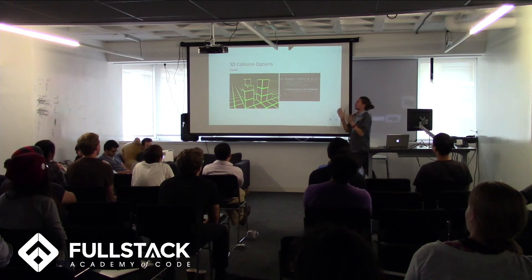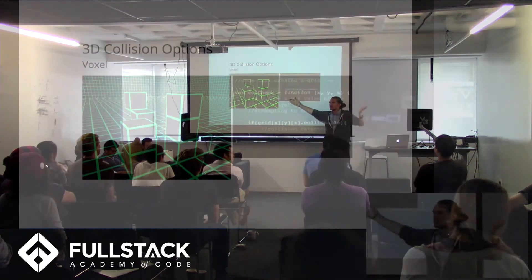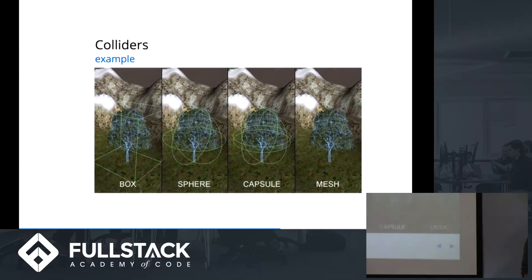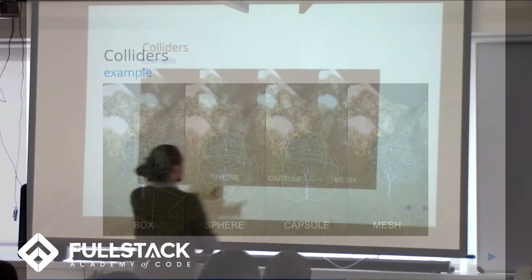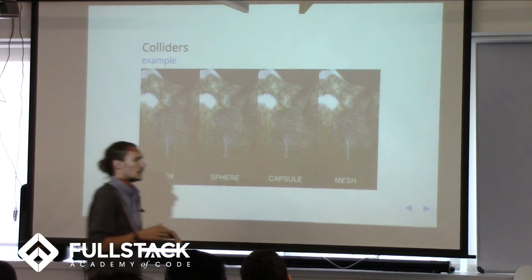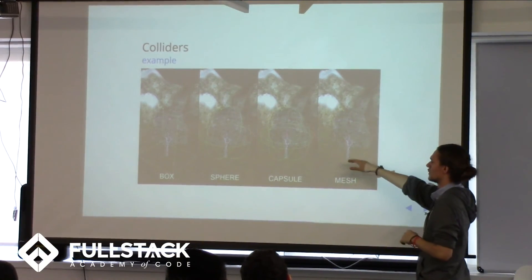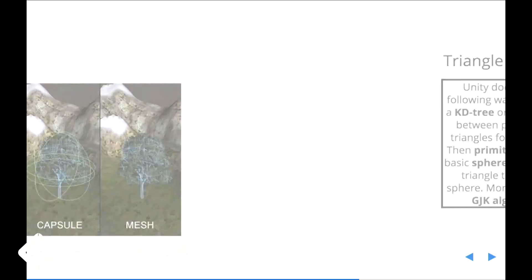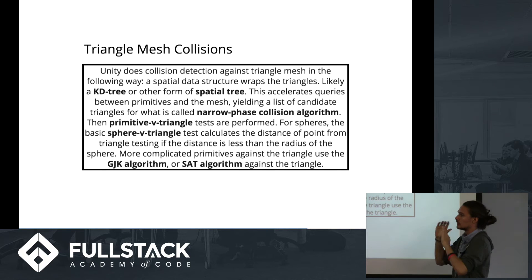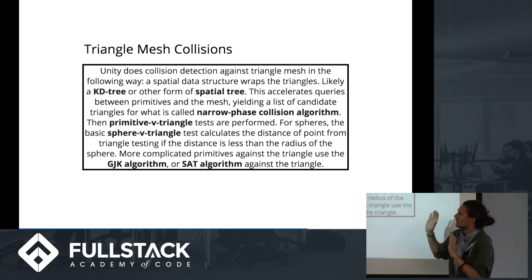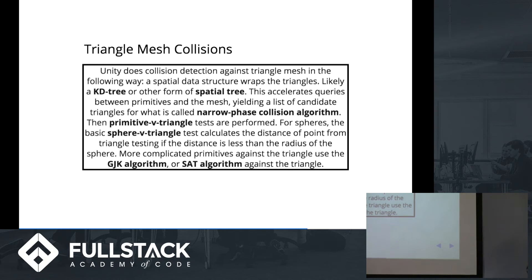This is voxel, which is a term for 3D grids. This is a 3D voxel collision detection — same thing, just add a Z value. Here are examples of 3D collision shapes: a box, a sphere, and a capsule. A capsule is typically used for a player object — it's just kind of the shape of a human. And here's a mesh. The most accurate form of 3D collision detection is triangle mesh collision, and this describes how Unity does its mesh collisions. If you're trying to do something that accurate, do not implement your own collisions — people have already built tons of libraries for that. Unless you have a PhD in geometry and math, don't try to do triangle mesh collisions yourself.